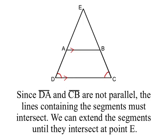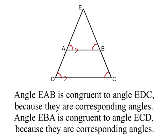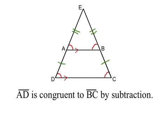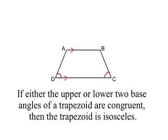Because two sides of the trapezoid are parallel, we have a transversal and two pairs of corresponding angles. Angle EAB is congruent to angle EDC by corresponding angles, and angle EBA is congruent to angle ECD also by corresponding angles. Then triangle EAB must be isosceles because if angles then sides, and the larger triangle EDC is also isosceles, so ED is congruent to EC by the same reasoning. By segment subtraction, segment AD is congruent to segment BC. We've just proven that if the lower two base angles of a trapezoid are congruent, then the trapezoid is isosceles.